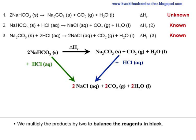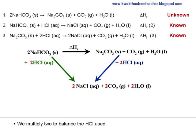We will multiply the products by 2 to balance the reagents in black. We multiply by 2 to balance the HCl that is used in this cycle.